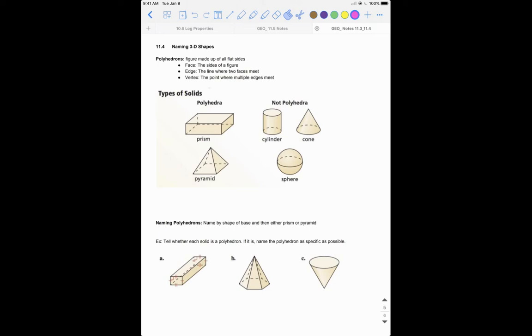All right, so our second portion of today's notes deals with 3D figures or 3D shapes and how we go about naming them. And so we're going to talk about polyhedrons today. A polyhedron is a shape that is made up of flat sides.